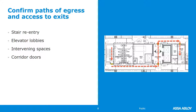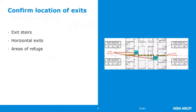Are there any areas with common path of travel that may be exceeded? There are other Asa Abloy virtual instructor-led training classes that review these concepts, and I recommend, if you aren't sure, that you take a look at those. Confirm the location of exits — exit stairs are exits. Horizontal exits are double-egress doors in a rated smoke barrier wall, and areas of refuge. Those will be indicated on the life safety plan, very commonly highlighted or shown by the dash pattern of the wall rating.